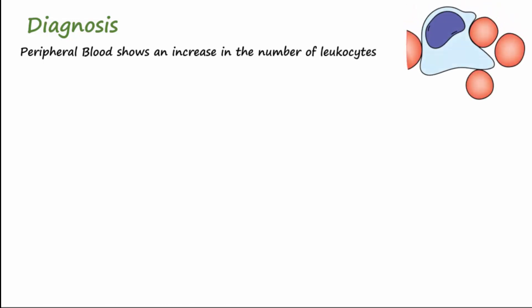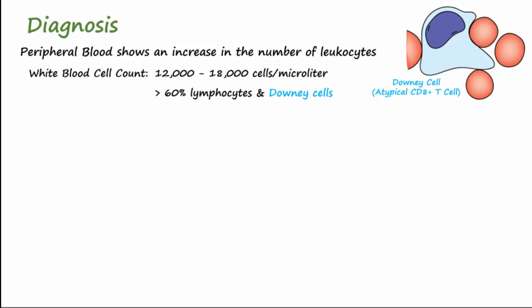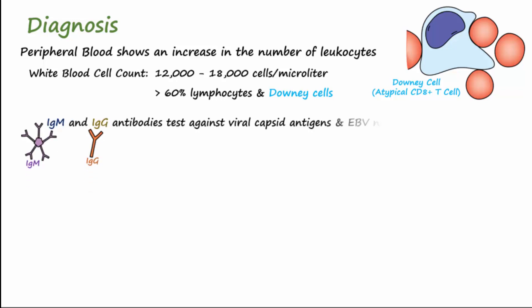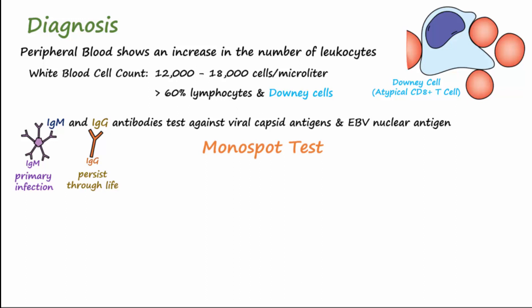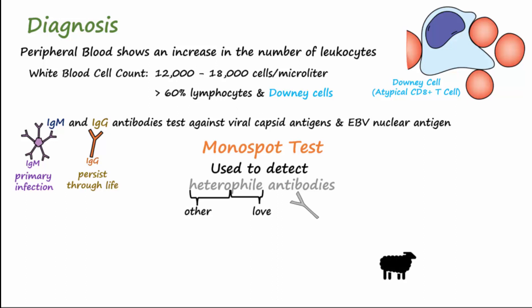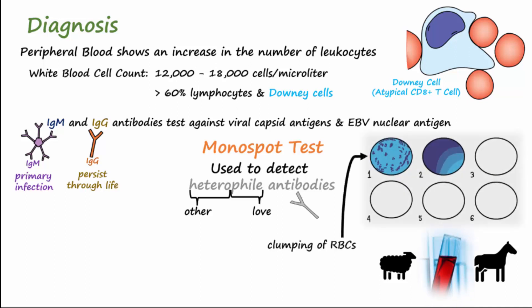Peripheral blood shows an increase in the number of leukocytes, with white blood cell count being between 12,000 and 18,000 cells per microliter, more than 60 percent of which are lymphocytes and downy cells. Definitive diagnosis involves testing IgM and IgG antibodies against viral capsid antigens and EBV nuclear antigens. IgM against capsid antigen are diagnostic of a primary infection, and IgG against capsid antigens persist throughout life. A monospot test is an inexpensive test that is sometimes used to detect heterophile antibodies, which target non-human, usually sheep or horse, red blood cells added to human serum. Clumping of the red blood cells indicates presence of the heterophile antibodies. Because heterophile antibodies can appear with other types of infections, the monospot test is not completely reliable and can also yield false positive results.